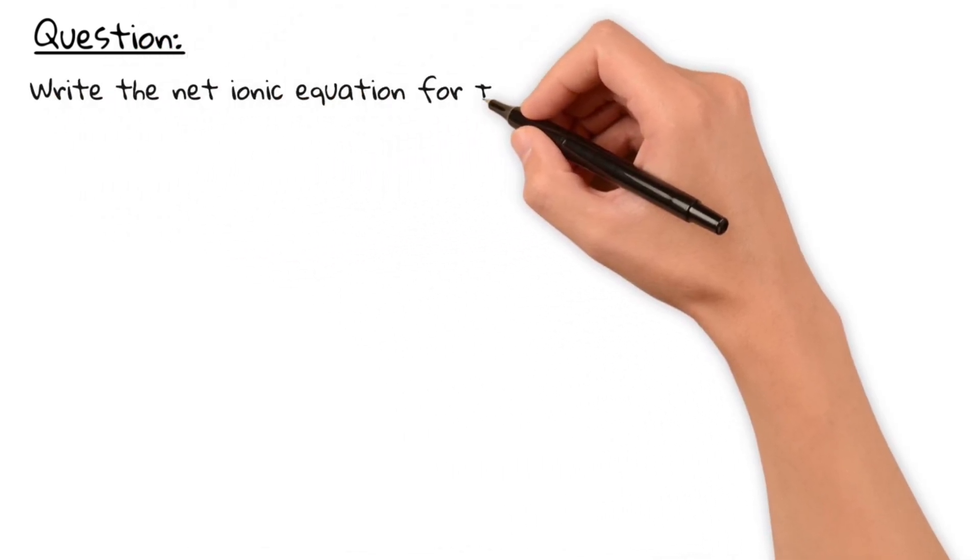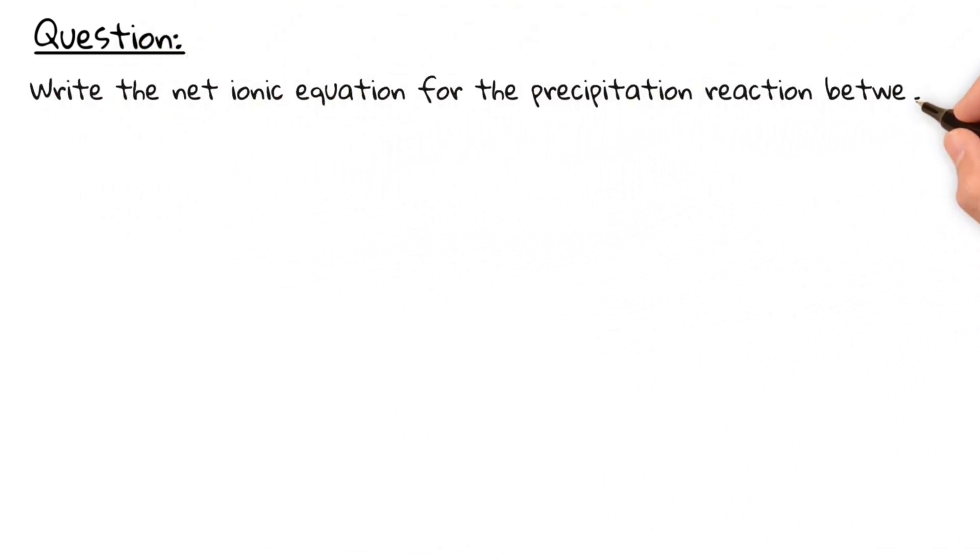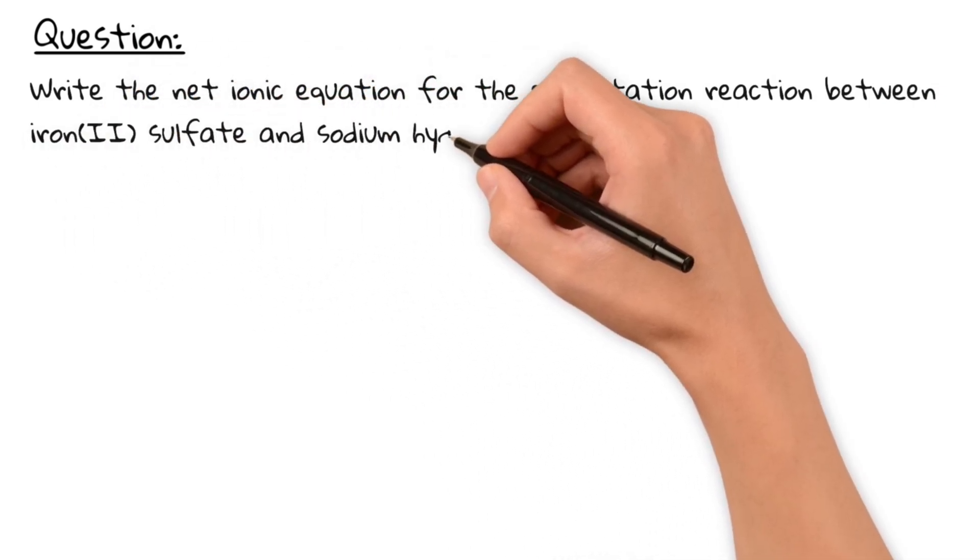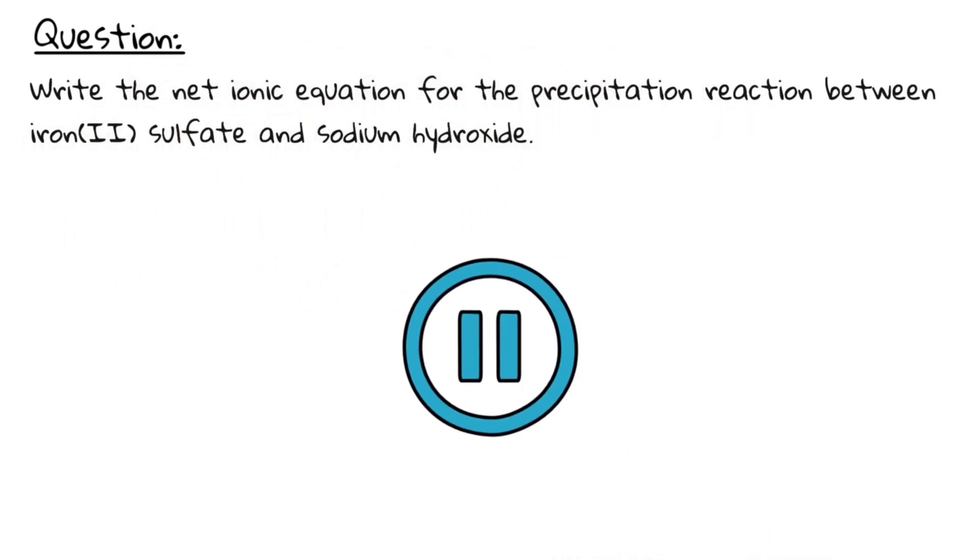Now, let's do a past-paper-style question without state symbols. Write the net ionic equation for the precipitation reaction between iron-2-sulfate and sodium hydroxide. Pause the video and give it a try.